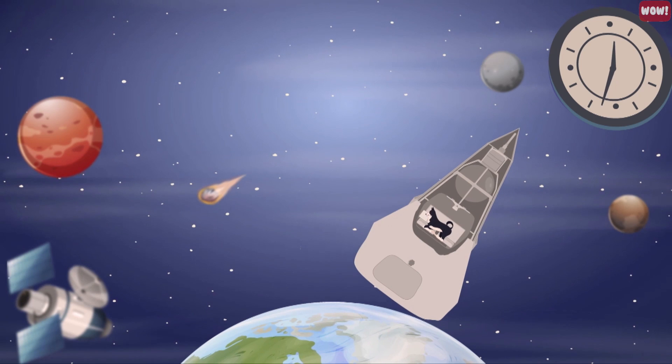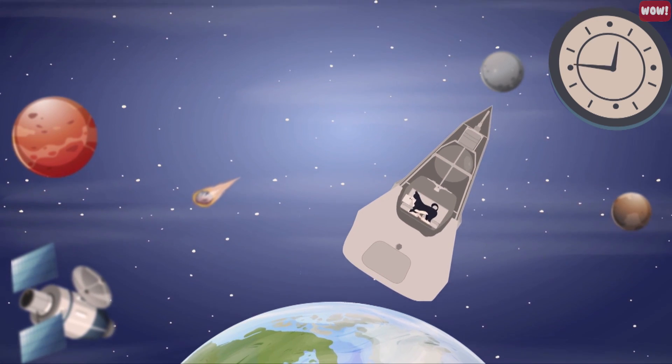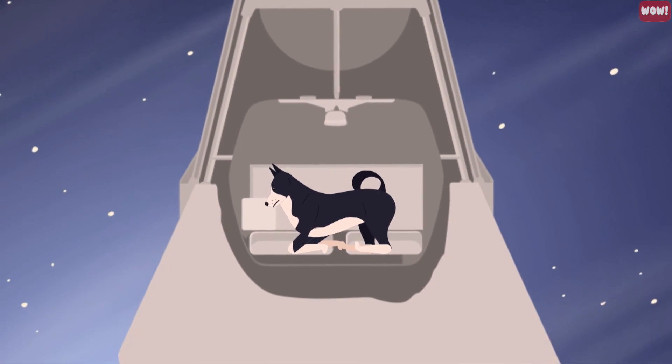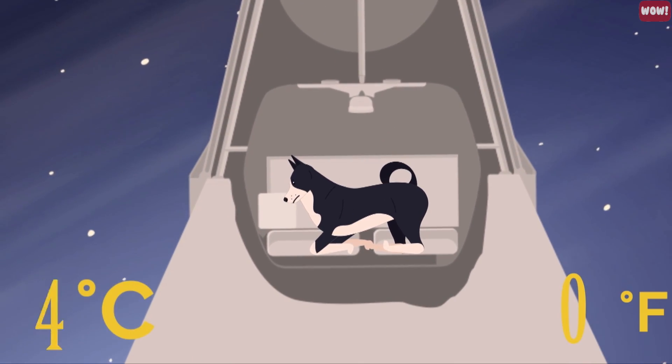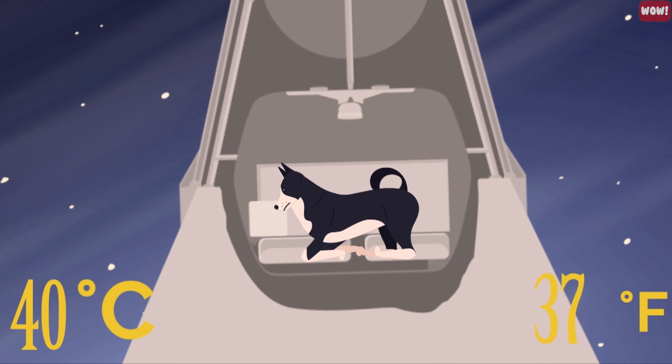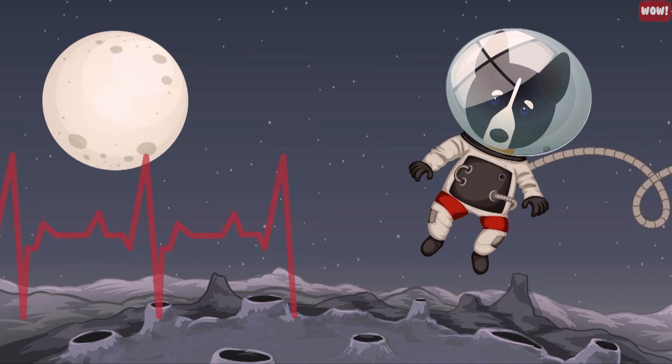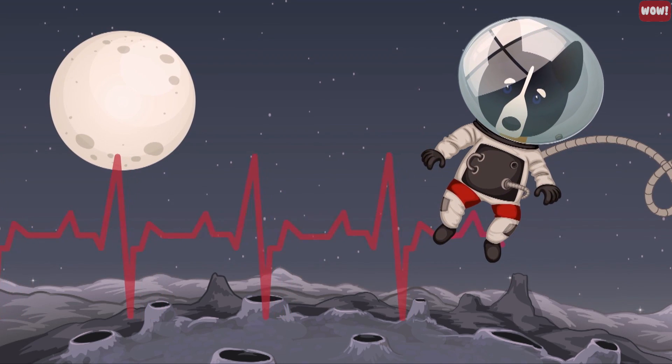According to him, Laika died within the first seven hours of orbit during her fourth circuit of the Earth in extreme pain. This was due to the temperature control system malfunctioning, causing the shuttle to heat up past 40 degrees Celsius or 100 degrees Fahrenheit. The extreme heat caused her to panic and her heartbeat to rise rapidly.